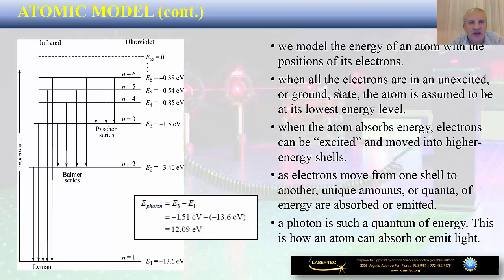For example, to move an electron from the fourth orbit with energy level negative 0.85 electron volts to the sixth orbit with energy level negative 0.38 electron volts, the electron must receive a delta in energy equal to negative 0.38 minus negative 0.85. The photon must carry exactly that specific amount of energy corresponding to a specific frequency. That photon is then absorbed by the electron, which jumps from the fourth to the sixth level.